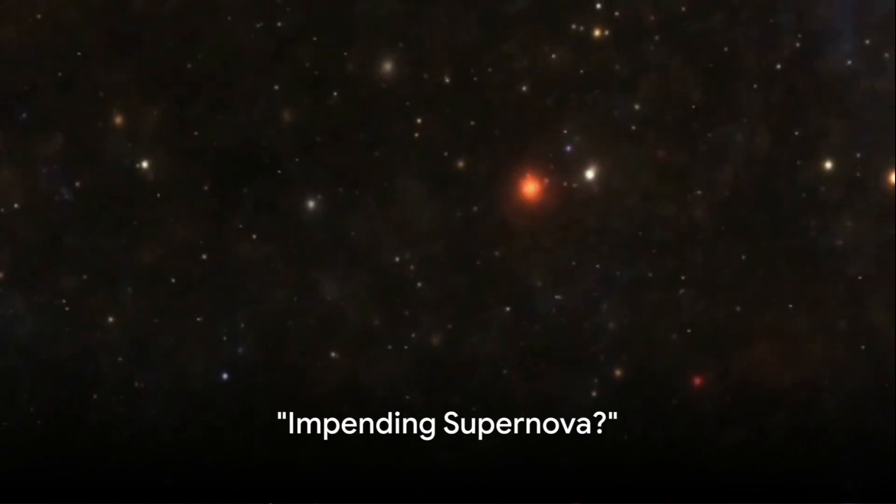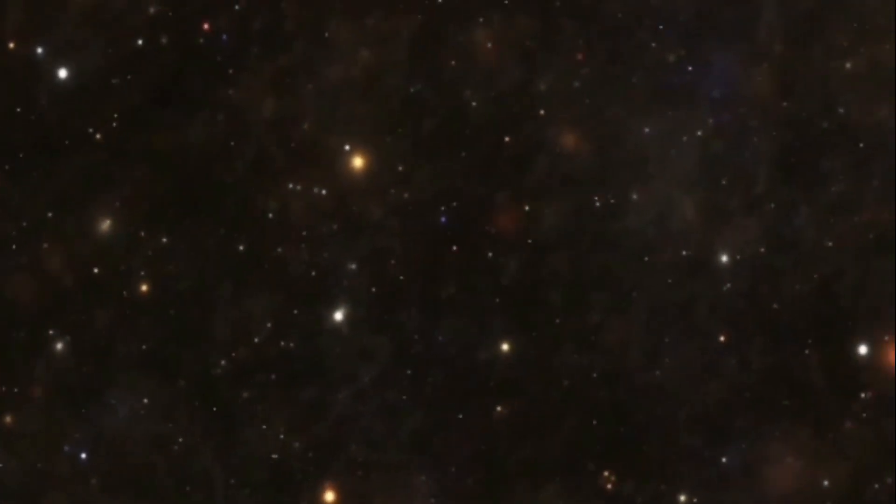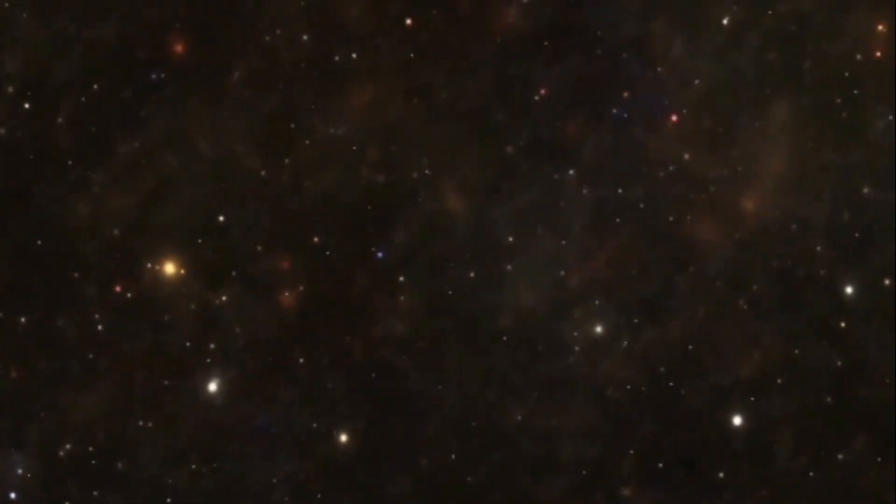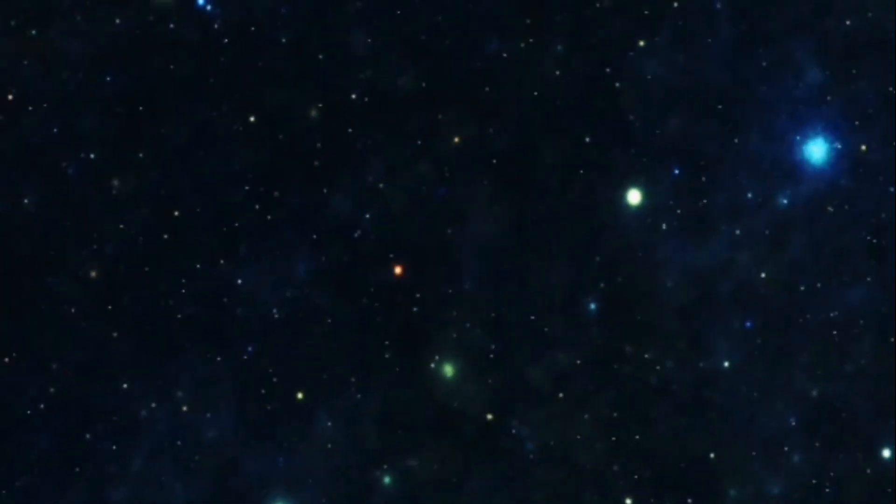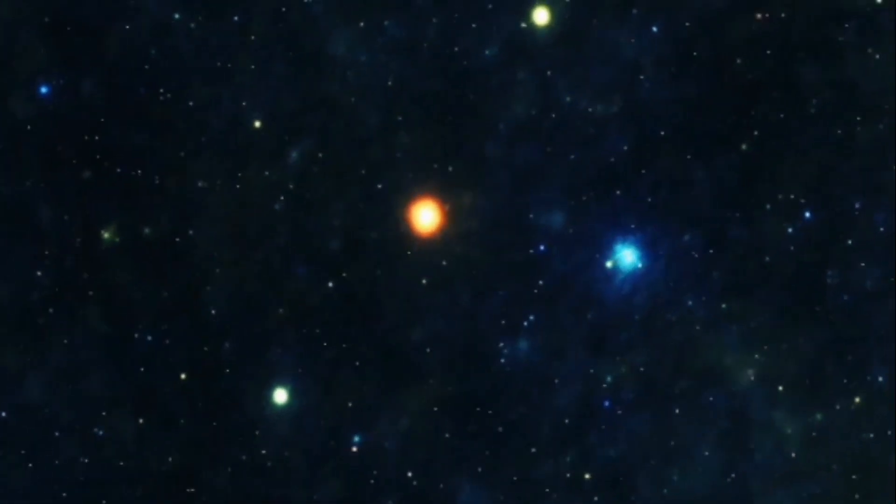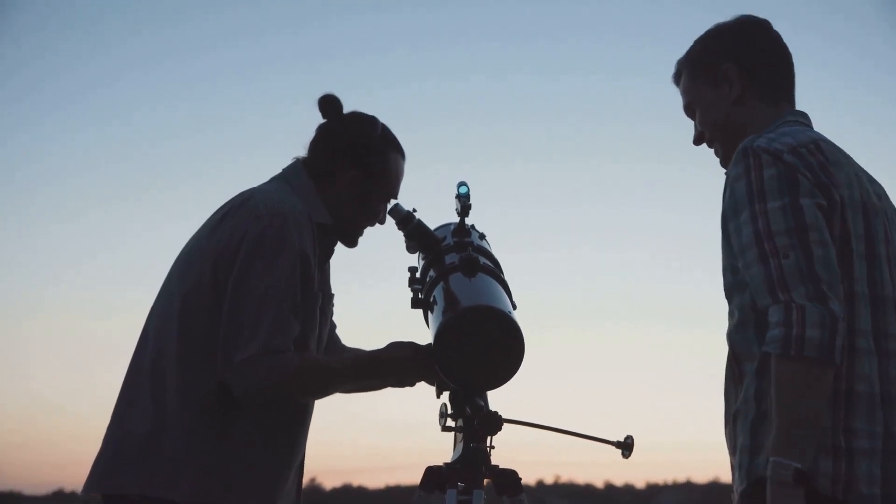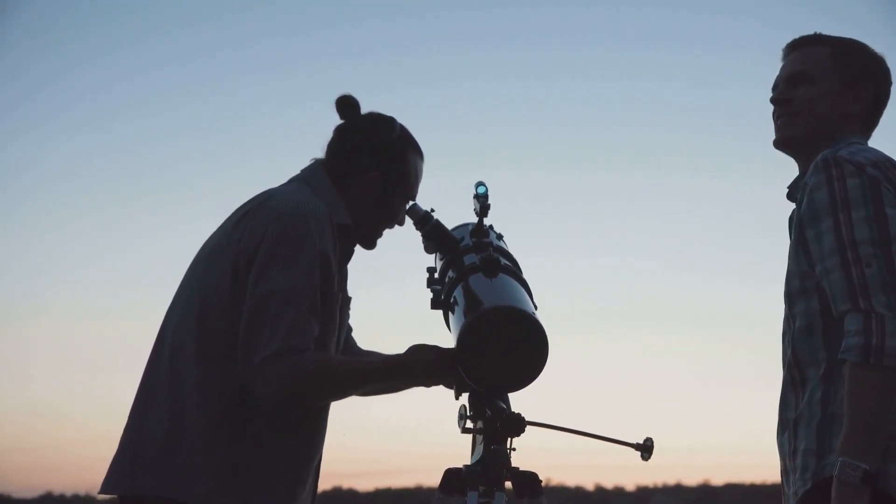Scientists have been speculating about the imminent supernova explosion of Betelgeuse for quite some time. This red supergiant, one of the most luminous stars in our galaxy, has been showing signs that could suggest an imminent transformation. Perhaps you've heard of the star's fluctuating brightness. This is one of many indicators that Betelgeuse is on the cusp of a dramatic change.